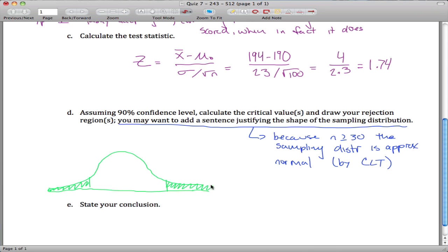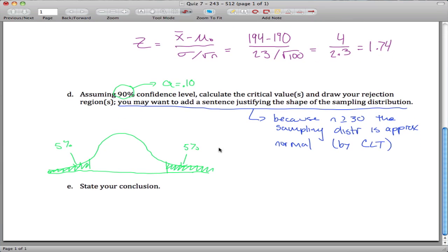And the way we'll figure out our critical values is 90% confidence level means that alpha is equal to 0.10. So that means the total area in the rejection region is 0.10. So this is 5% and this is 5%. And the critical value that corresponds with 5% in each of the tails from your z-tables is 1.645. Negative if it's on the left, positive if it's on the right. You could look that up in tables or use your calculator.